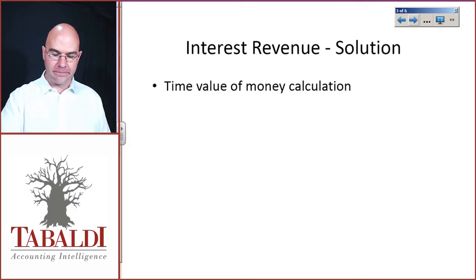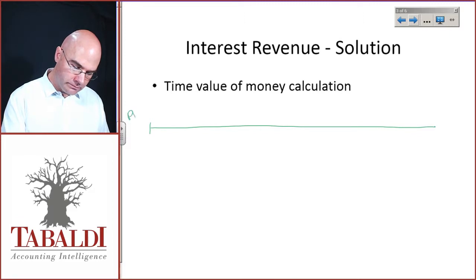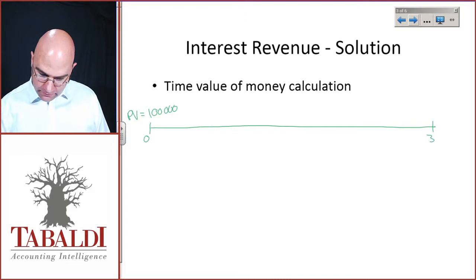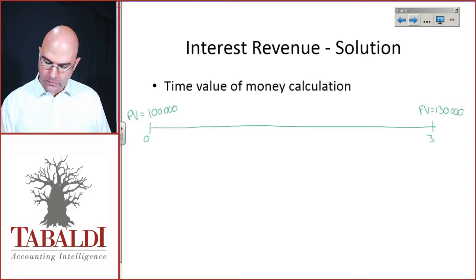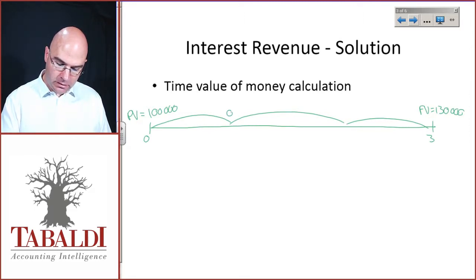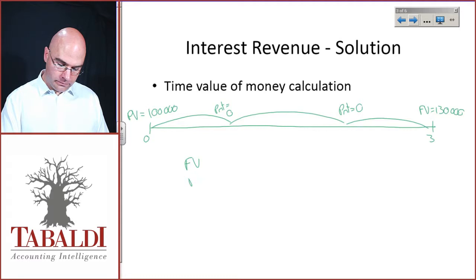So where do we start? The first thing to calculate is the time value of money components. Let's put this on a timeline. Our present value equals 100,000 at time zero today. In three years' time you will be receiving the future value of 130,000. The periods one, two, three had interim payments of zero, zero, and then only the final future value. What's missing? You've got the future value and the present value.